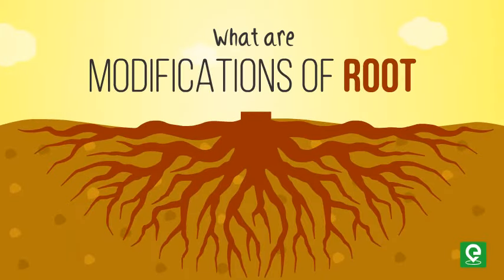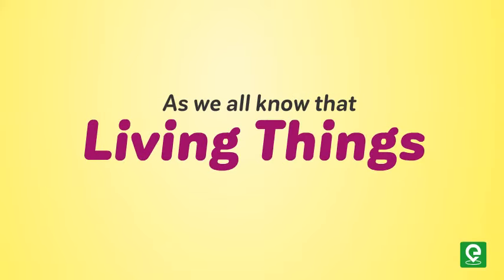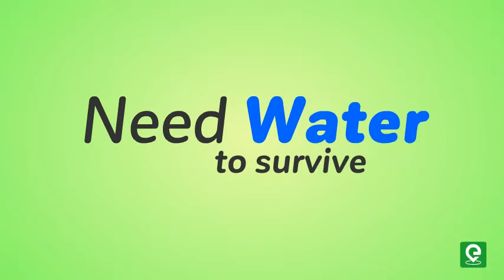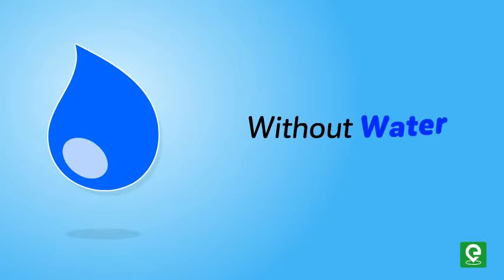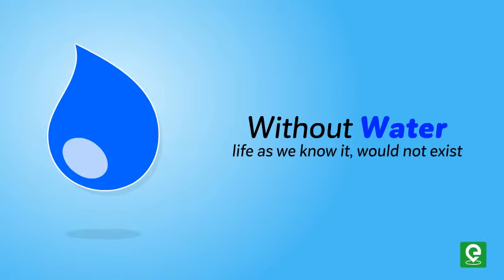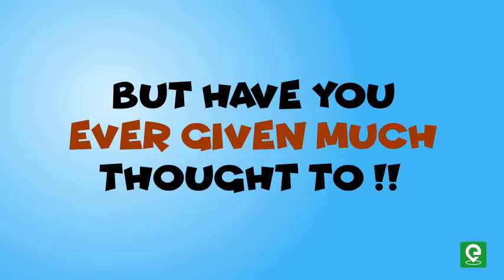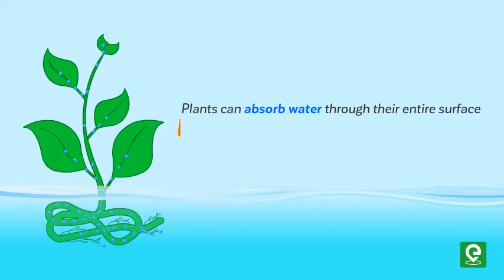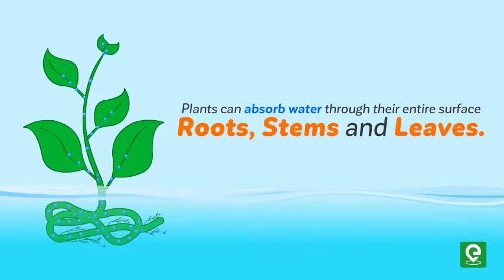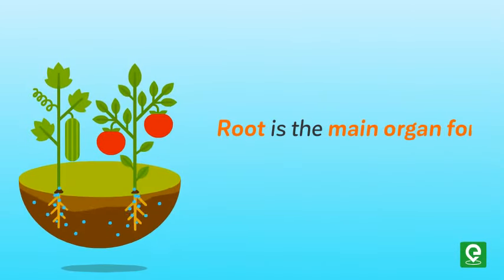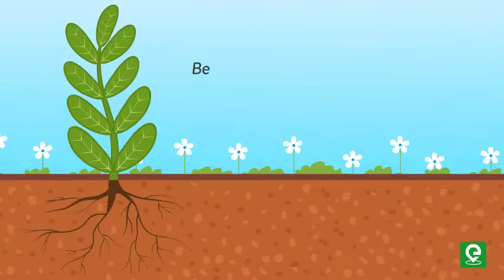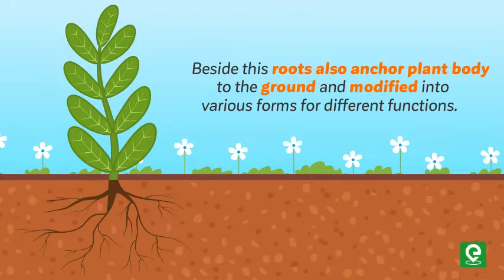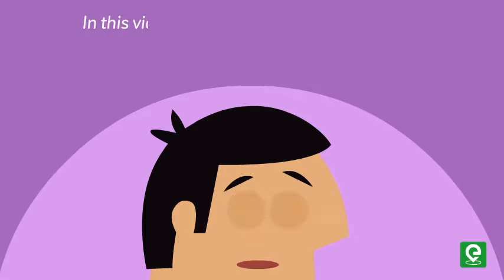What are modifications of the root? As we all know, living things — right from the tiny cyanobacteria to the giant blue whales — every living thing needs water to survive. Without water, life as we know it would not exist. Plants can absorb water through the entire surface: roots, stems, and leaves. But the root is the main organ for water absorption. Besides this, roots also anchor the plant body to the ground.